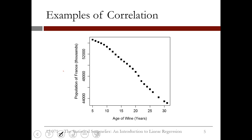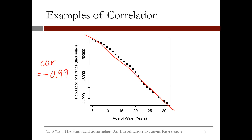This plot shows the age of wine compared to the population of France. It looks like there's a very strong negative linear relationship between these two variables. It turns out that the correlation is equal to negative 0.99, which is very close to negative 1, the smallest correlation can be. Let's compute some correlations in R.